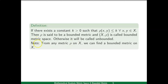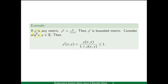One important point to note here is that given any metric rho on X, we can always find a bounded metric on X. Whenever rho is a metric, we can define rho dash as rho upon 1 plus rho, and rho dash is also a metric. Now, rho dash xy equals rho xy upon 1 plus rho xy, and this expression is always less than or equal to 1 because the denominator is larger than the numerator. Therefore rho dash xy is less than or equal to k, where k equals 1, meaning rho dash xy is less than or equal to 1 for every xy in E. Therefore rho dash is a bounded metric on set E.